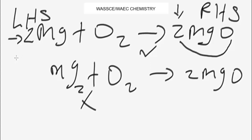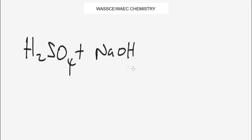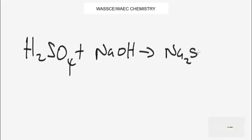Let's look at another typical example. What if you are given this chemical equation to balance: sulfuric acid (H₂SO₄) plus sodium hydroxide (NaOH) gives sodium sulfate plus water. We are asked to balance this chemical equation.